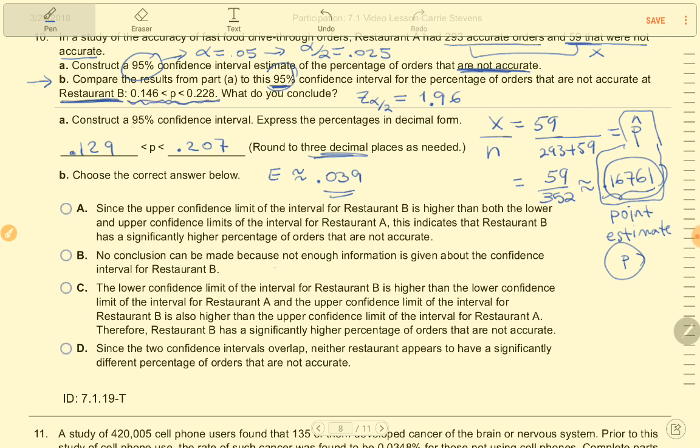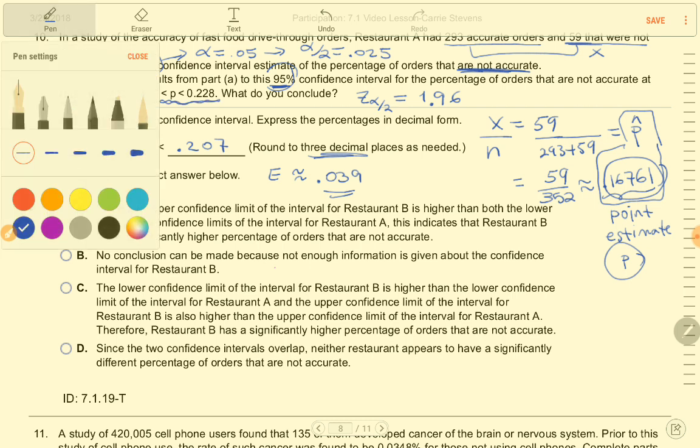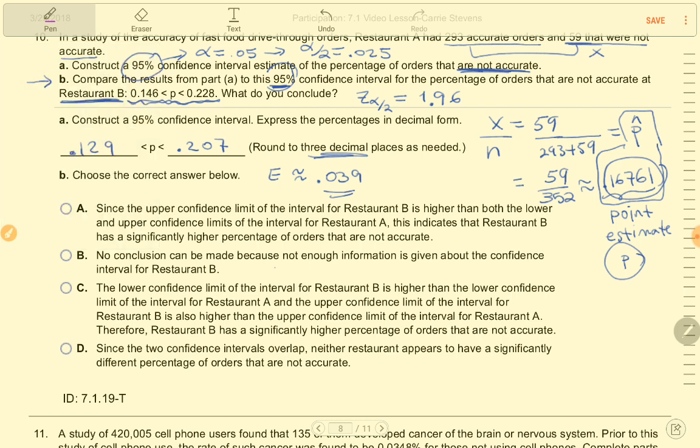So we're going to compare this to restaurant B's confidence interval. Restaurant B, there's an interval estimate for inaccurate orders. We're 95% confident that their population proportion of inaccurate orders is between 0.146 and 0.228. We want to compare that to restaurant A, which has, according to this 95% confidence interval, between 12.9% and 20.7% inaccurate orders.